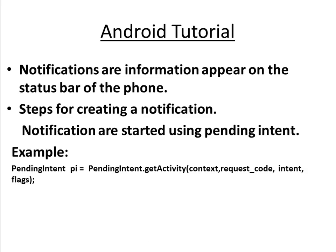Here is the example for creating the PendingIntent object: PendingIntent pi = PendingIntent. We use the method called GetActivity for getting the PendingIntent object. There are four arguments for the GetActivity method: first one is the context, next one is a request code. A request code is essential for canceling the notification generated by the activity. Next one is the Intent object, and finally a flag.